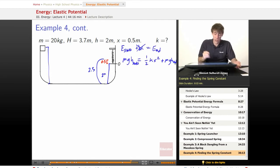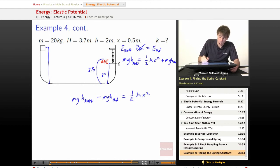So at this point, we're ready to do it. So we've got mgh start minus mgh end equals one-half kx squared. We know what x is, we know what m is, we know what g is, we know what h at the start is, we know what h at the end is.